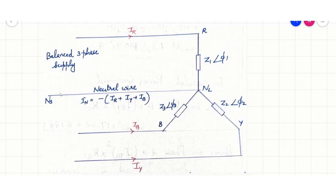The voltages across the 3 load impedances are equalized even though the load impedances are unequal. However, the current in each phase will be different. The vector sum of currents in the 3 lines is not zero but is equal to the neutral current.